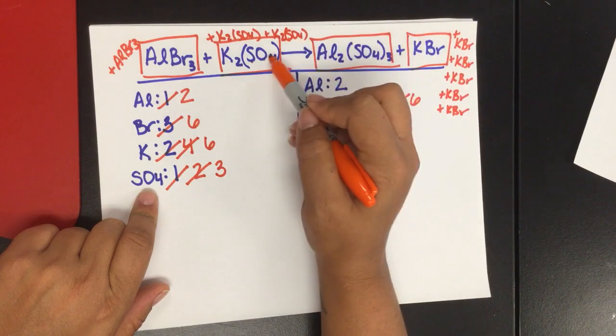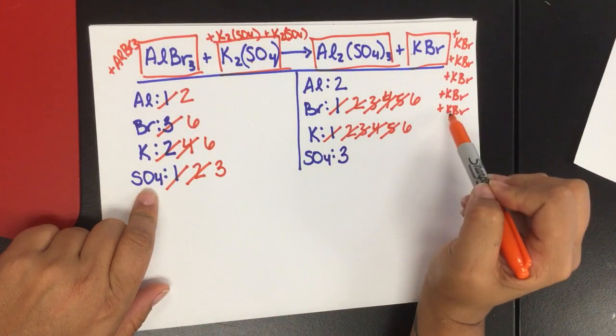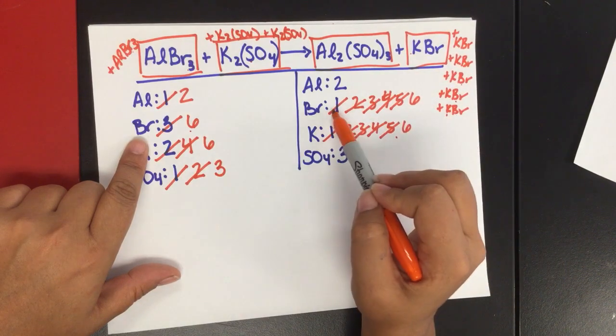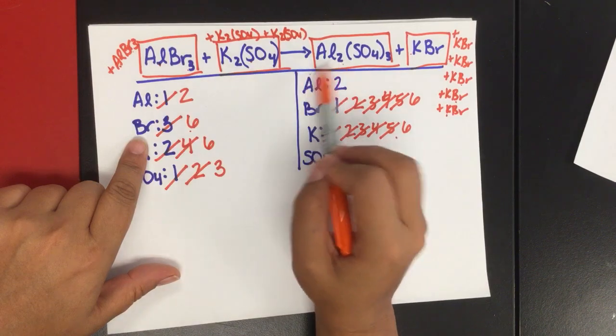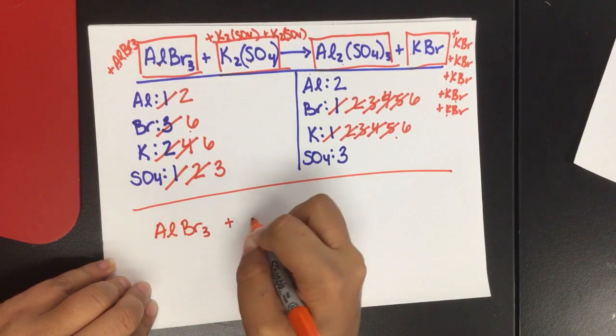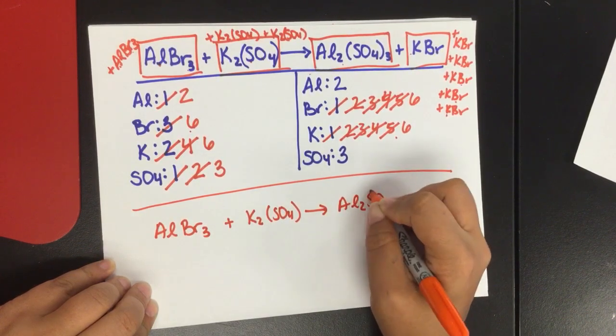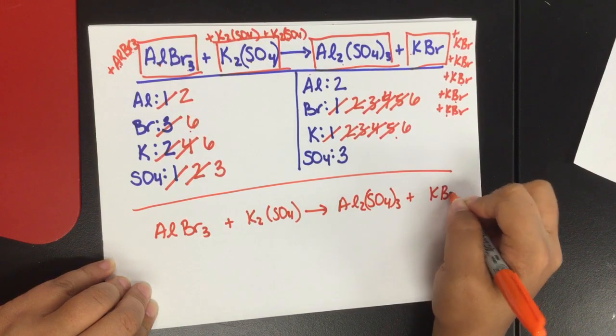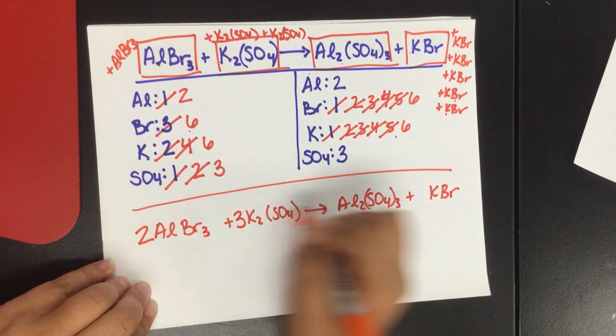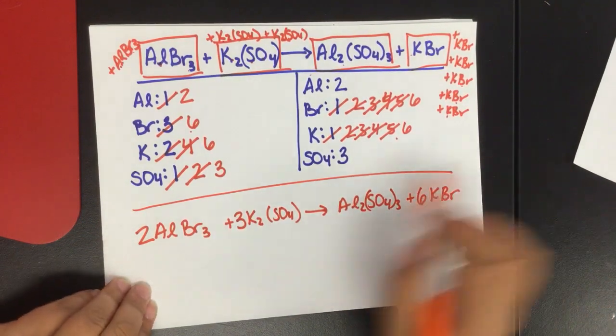I have 3 SO4s over here, I have 1, 2, 3 SO4s over here. I have 2, 4, 6 Ks here, 1, 2, 3, 4, 5, 6 Ks here. I have 3, 6 BRs, 1, 2, 3, 4, 5, 6 BR. 1, 2 AL, and 2 AL. So it has become balanced. So when I write my final equation... And then I do my counting: 1, 2, so I add the coefficient 2. 1, 2, 3, I add my coefficient 3. 1, leave it alone. 1, 2, 3, 4, 5, 6. Add the coefficient 6. This is my final equation.